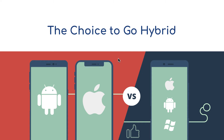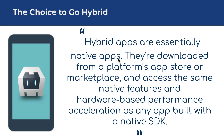Thankfully, times have changed as mobile and web technology have evolved. Hybrid has emerged as a viable alternative to native, and many are now looking at hybrid development as a way to simplify and speed up development. Hybrid apps are essentially native apps — they are downloaded from a native app store or marketplace and access the same native features and hardware-based performance acceleration as any app built with a native SDK.